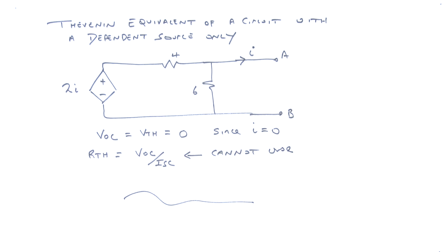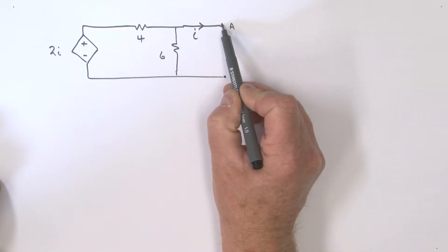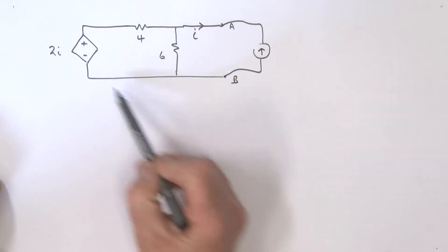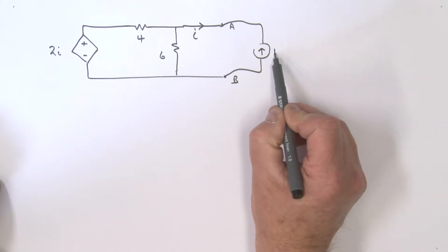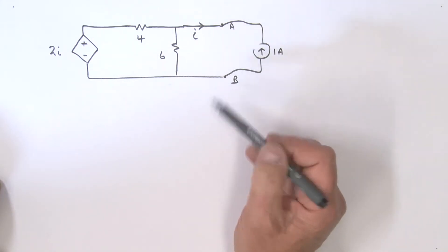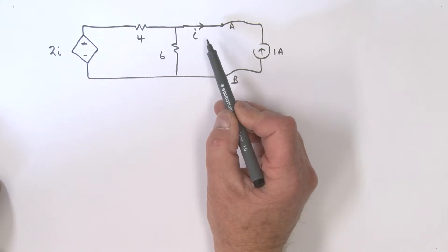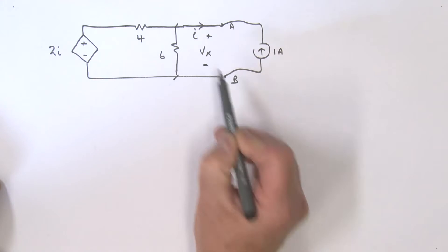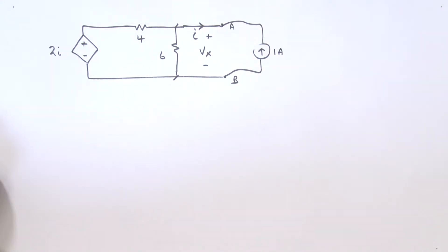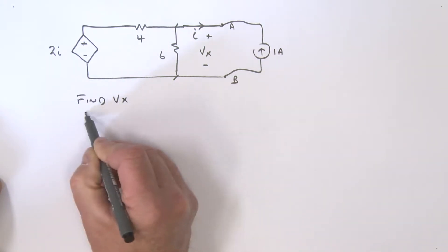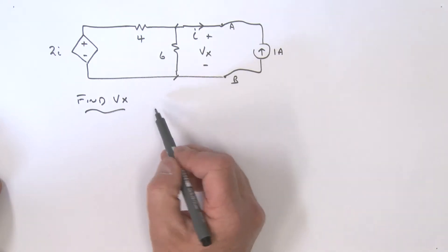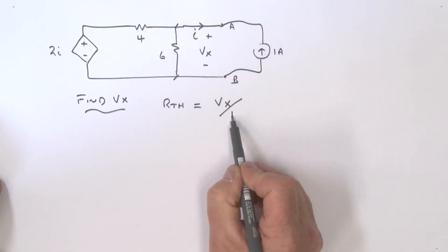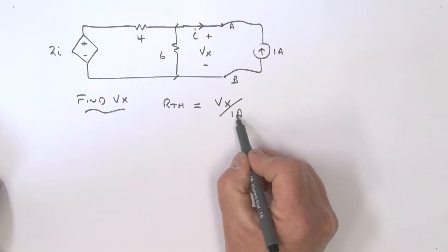It's a little bit tricky, but what we're going to do is apply a source — in this case a current source — to this circuit. I'm going to choose a simple value: a 1-amp current source. I apply this source to the circuit and what I want to find is the voltage at these terminals, which we'll call Vx. Then I can find R_Thévenin as Vx divided by the 1 amp pushed in.